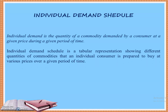Individual demand schedule is a tabular representation showing different quantities of a commodity that an individual consumer is prepared to buy at various prices over a given period. It tells us what quantity of a commodity an individual consumer is willing to buy at different prices.